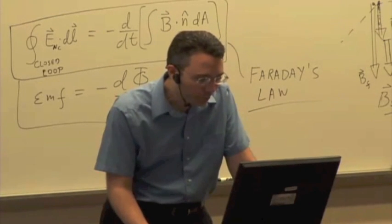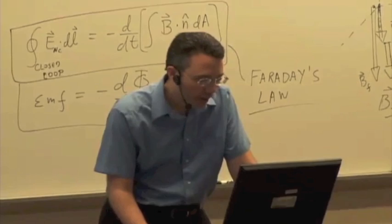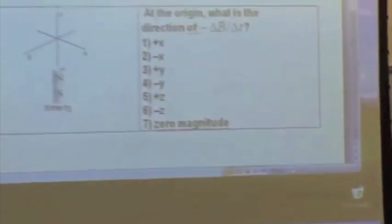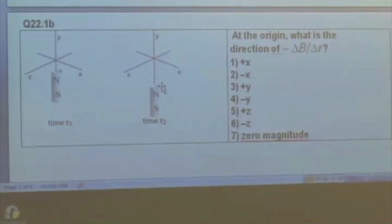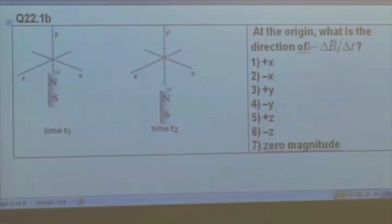Let's try another one. Now you can kind of get the idea. Same thing, similar sort of thing. We have the north pole closer to the origin. Now we're moving the bar magnet farther away. And be careful here of the sign because I'm asking for negative delta B over delta T.